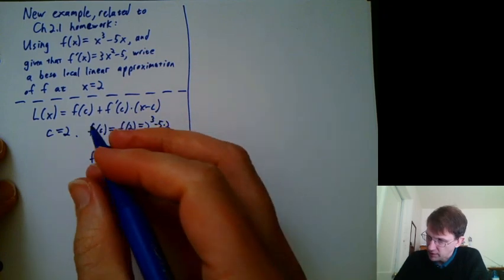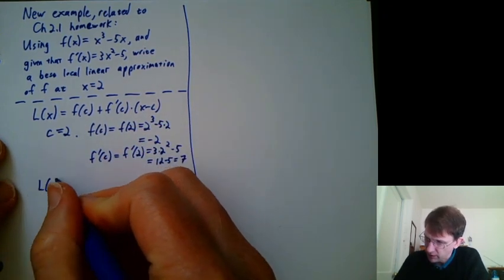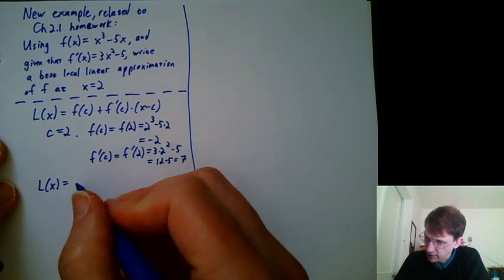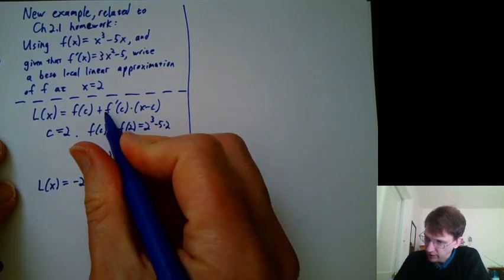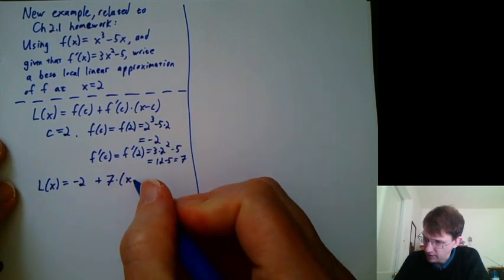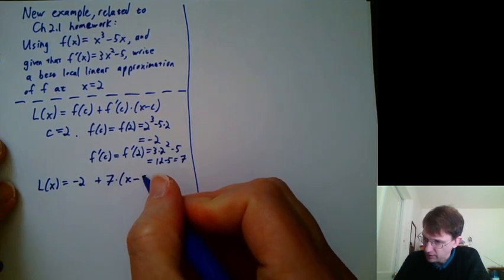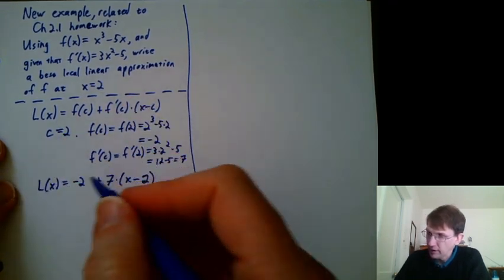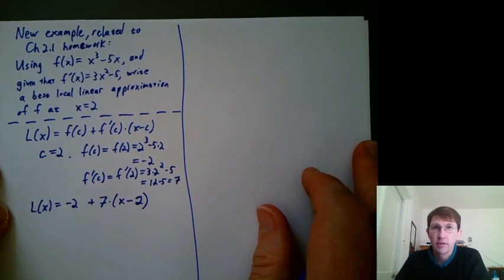So now I have all the information to fill in here. I can say l(x) = f(c), which is -2, plus f'(c), which is 7, times x - c, and c is 2 here. So at that point, I'm done with the algebra for it, and it's time to do the evaluation.